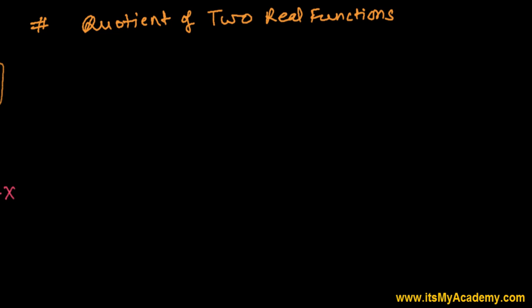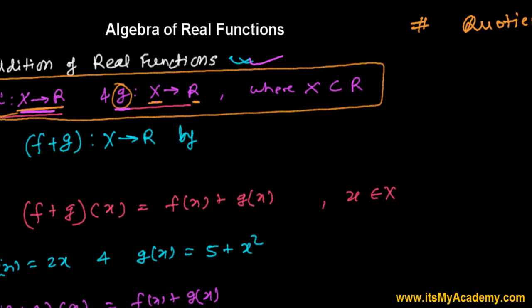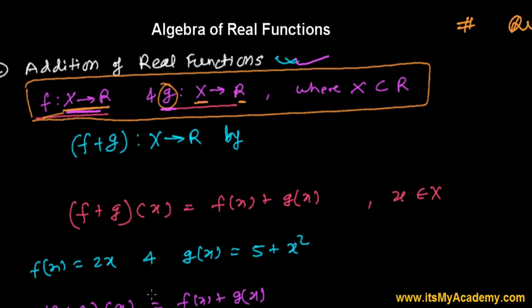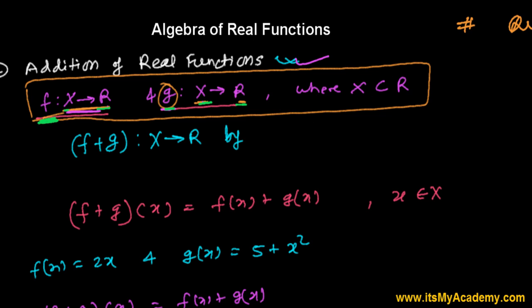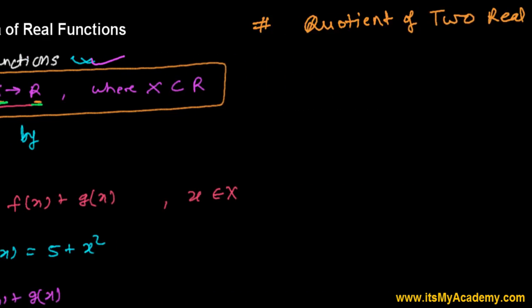The conditions are the same. We have two real functions: function f which is defined from X to ℝ, and g which is defined from X to ℝ. These are real numbers, and X is a subset of the real numbers, maybe having a few members.